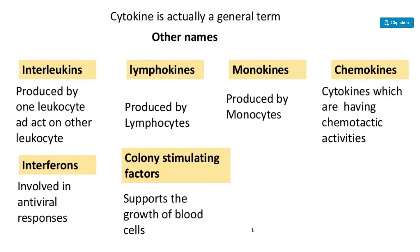The most important type of cytokine is interleukins — produced by one leukocyte and acting on another leukocyte. Lymphokines are produced by lymphocytes. Monokines are produced by monocytes. Chemokines are cytokines that have chemotactic activity, meaning they are attracted through a chemical response.